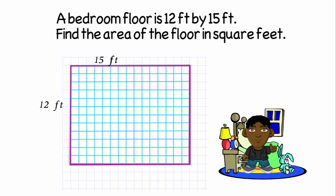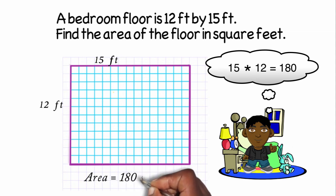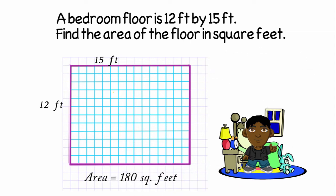I noticed I have 12 rows in which there are 15 squares in each row. So instead of adding up 15 twelve times, I'll do 15 times 12. I get 180 square feet. So there are 180 squares that are a foot long and a foot wide that can cover my floor space.